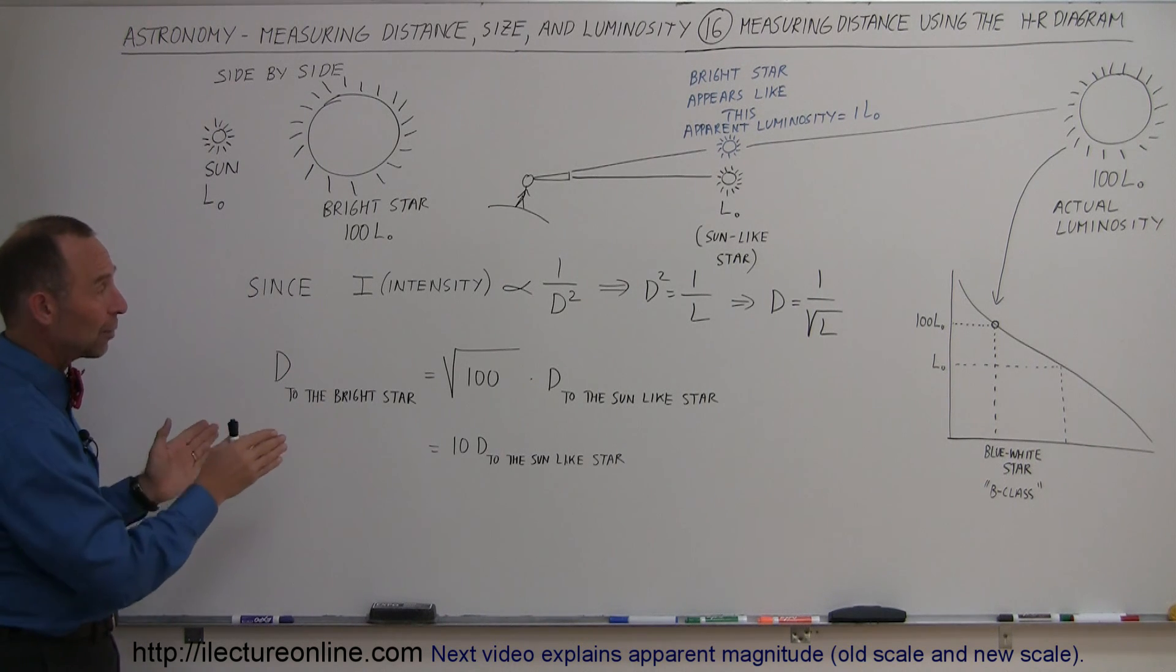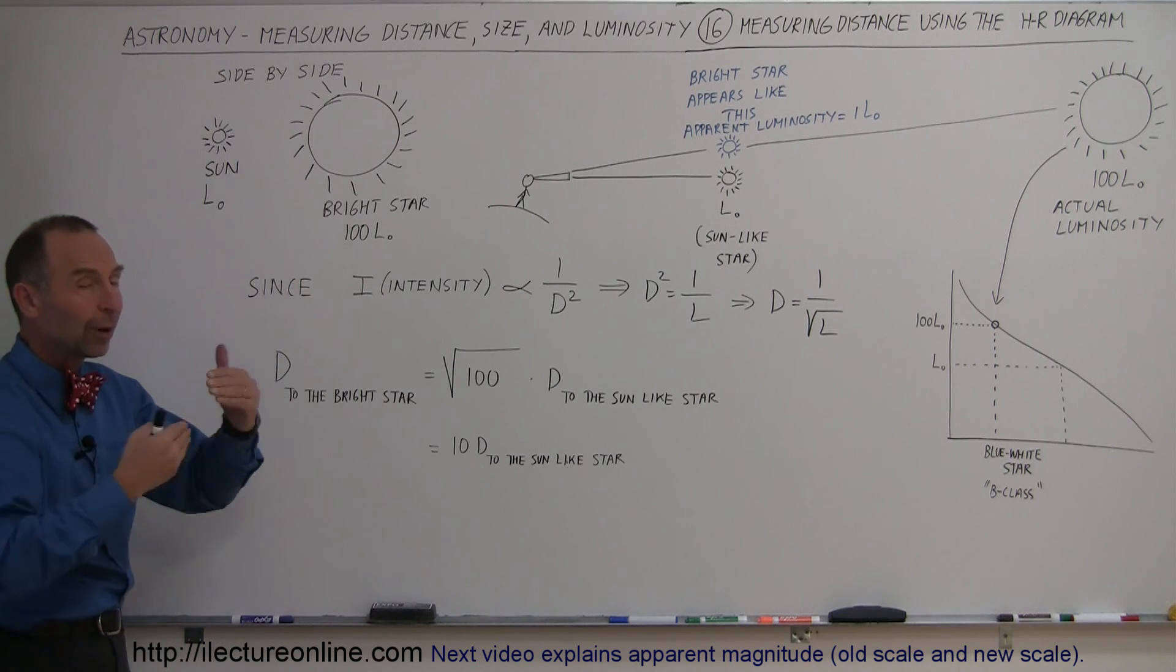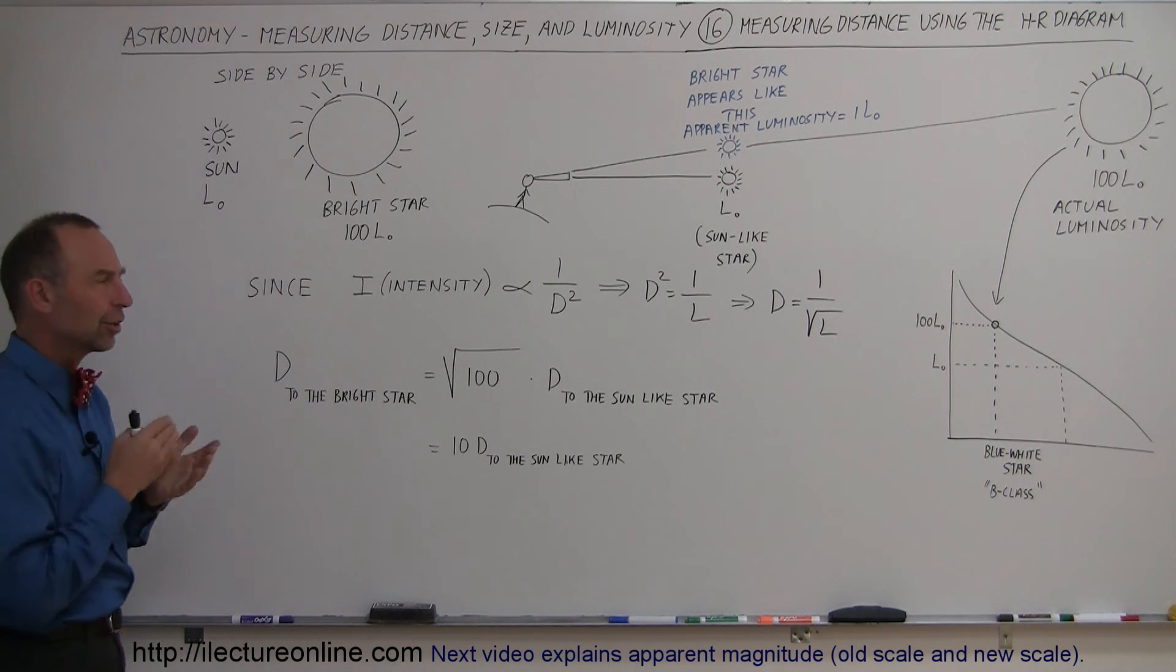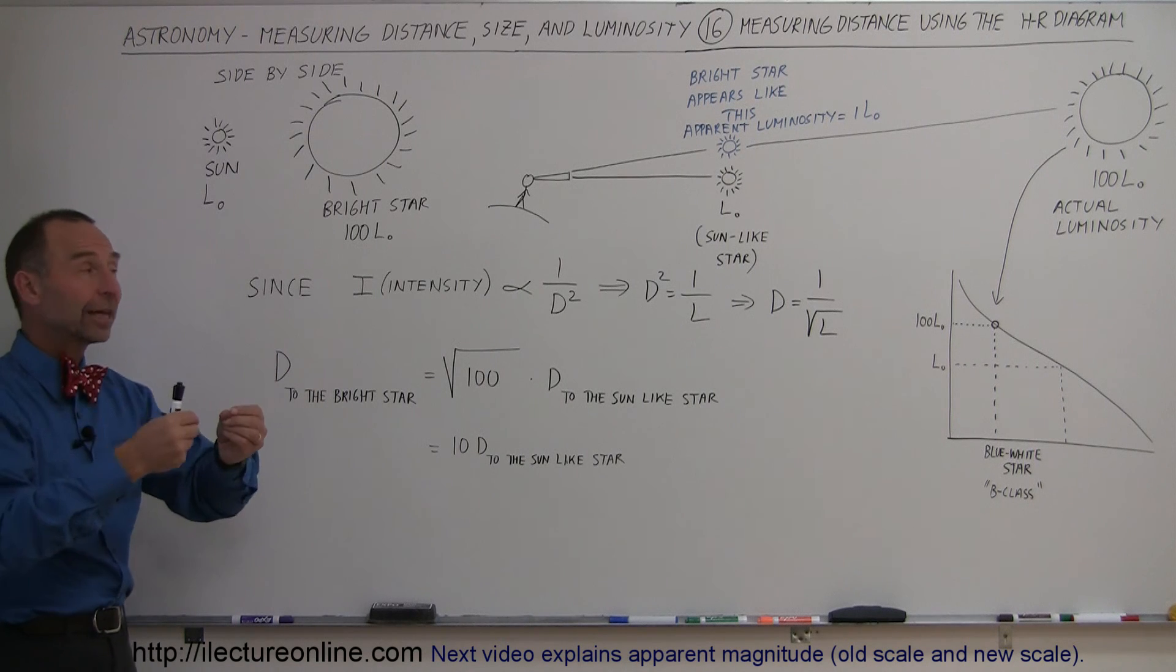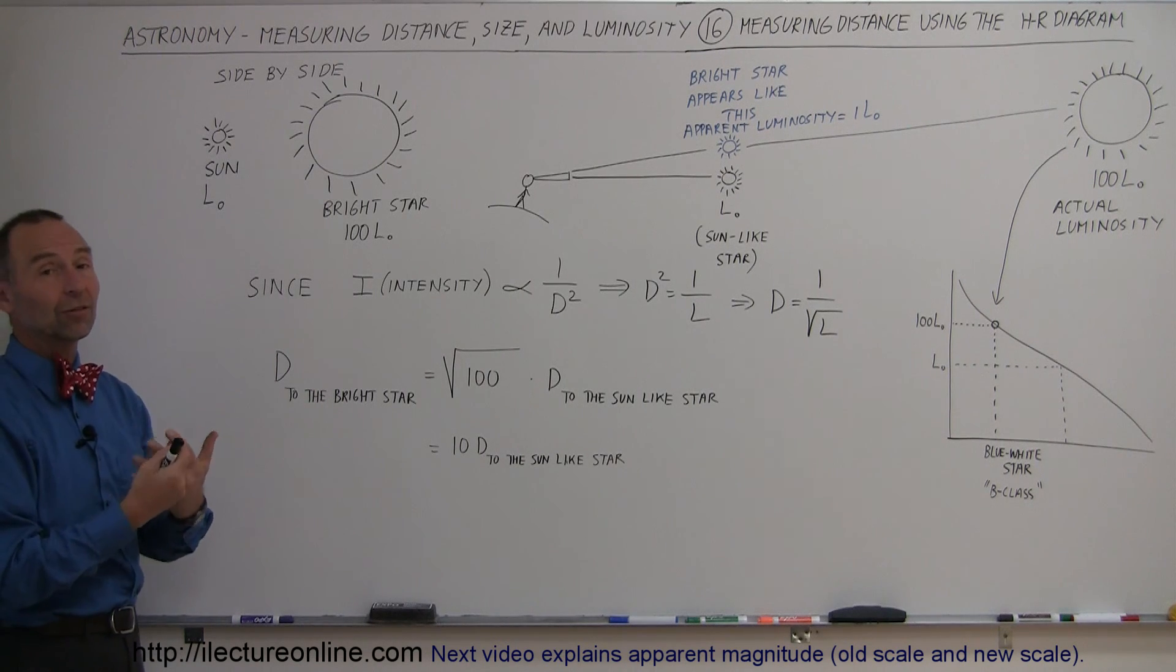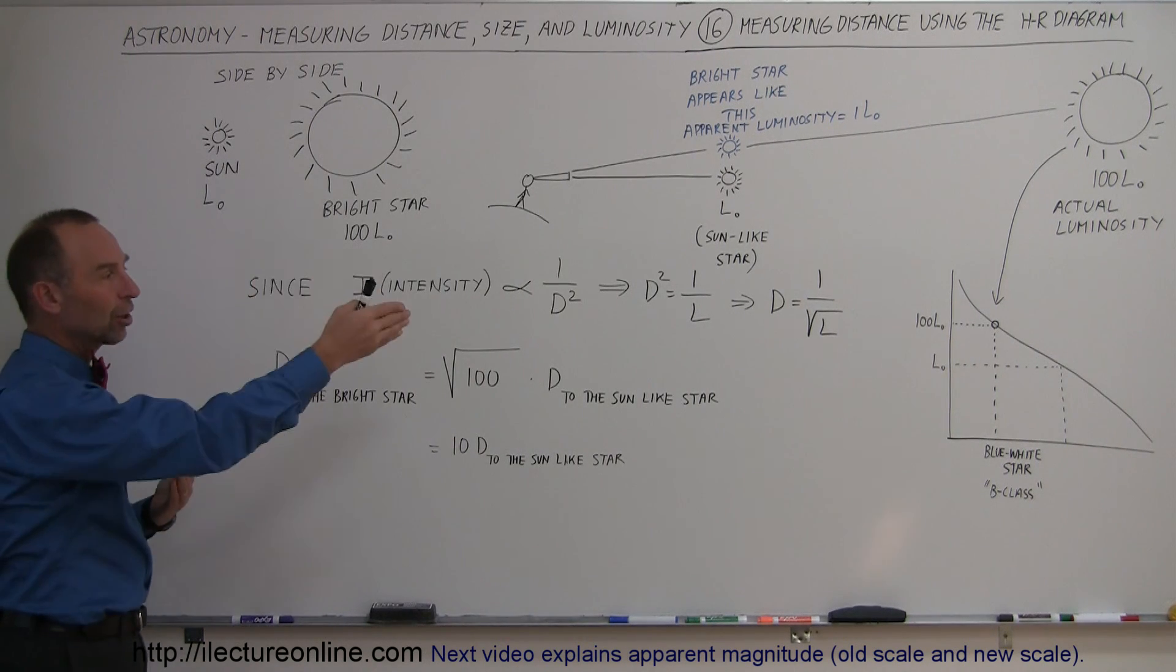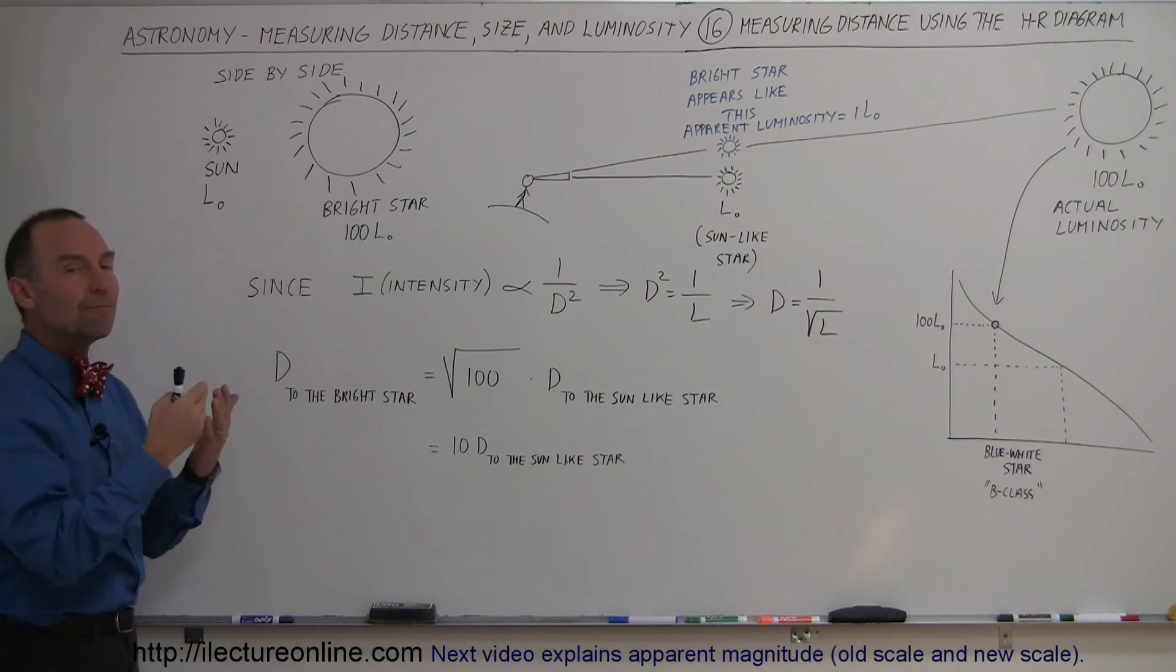So, there you go. That's how we use the H-R diagram to find the relative distance. In the next several videos, I'll talk about the magnitude scales, and then we'll put it all together, and then we'll be able to figure out the distance to any star based upon its color and its measured brightness.